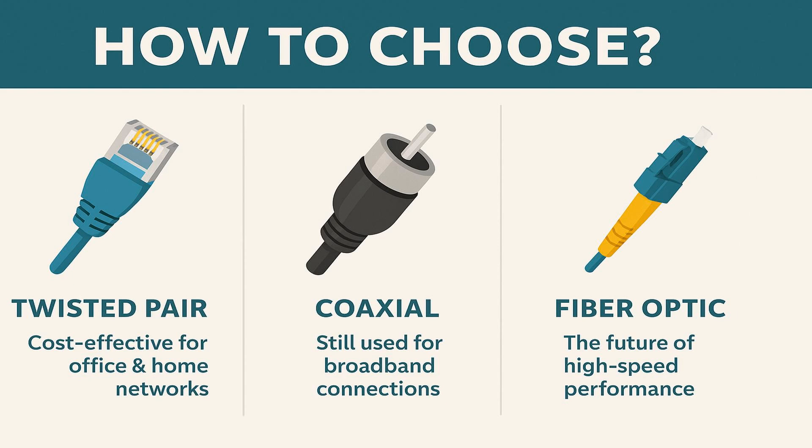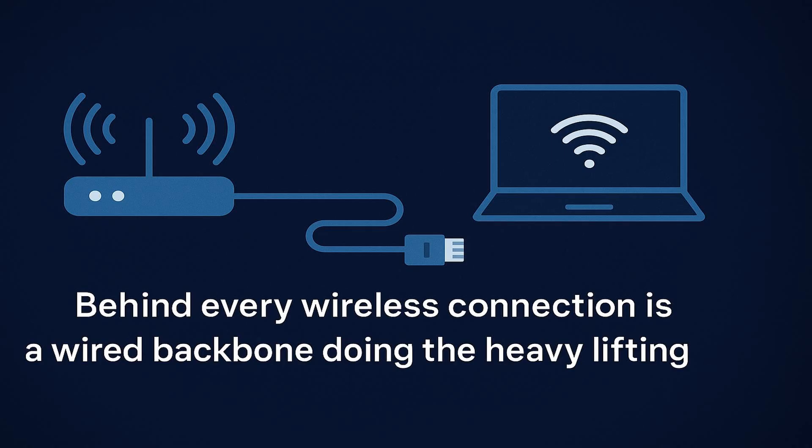So how do you choose? Twisted pair is your go-to for most office and home networks — cost-effective and fast enough for daily use. Coaxial is still around for certain broadband connections. And fiber optics — that's the future. If you need blazing speed and ultra-reliable long-distance performance, fiber is the way to go. Knowing your cables helps you plan smarter networks, troubleshoot faster, and understand how data physically gets from point A to B. Behind every wireless connection is a wired backbone doing the heavy lifting.